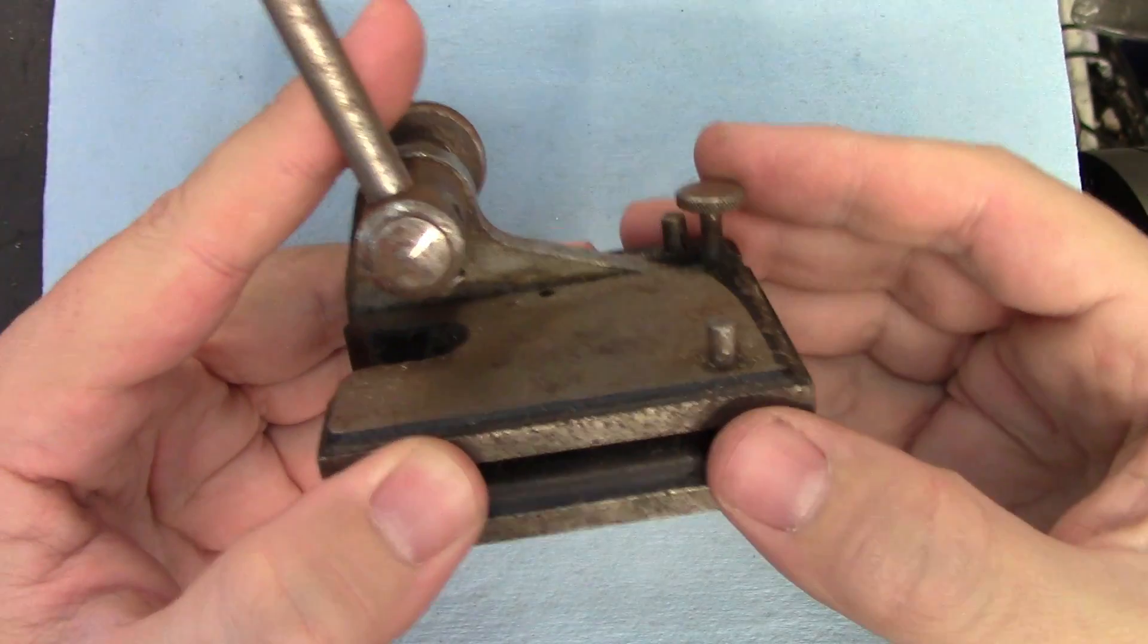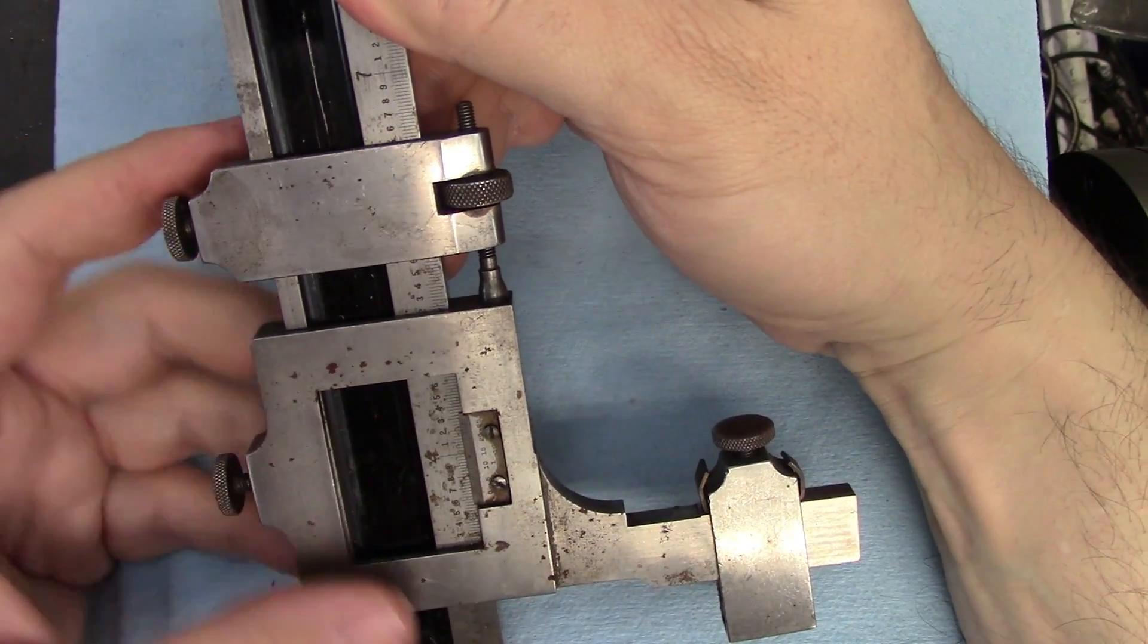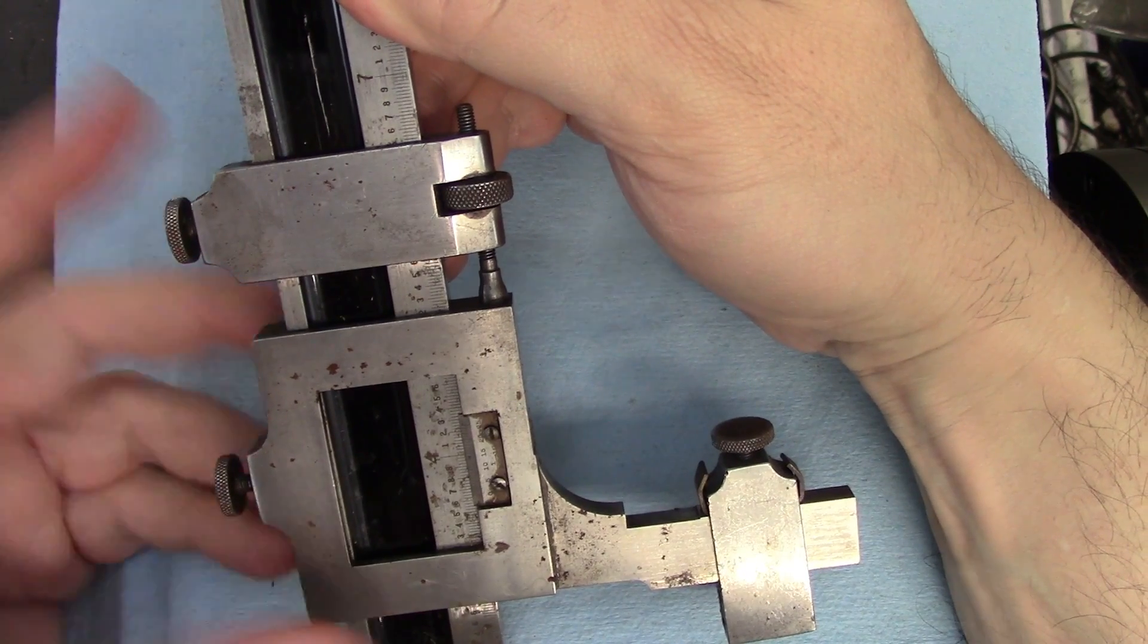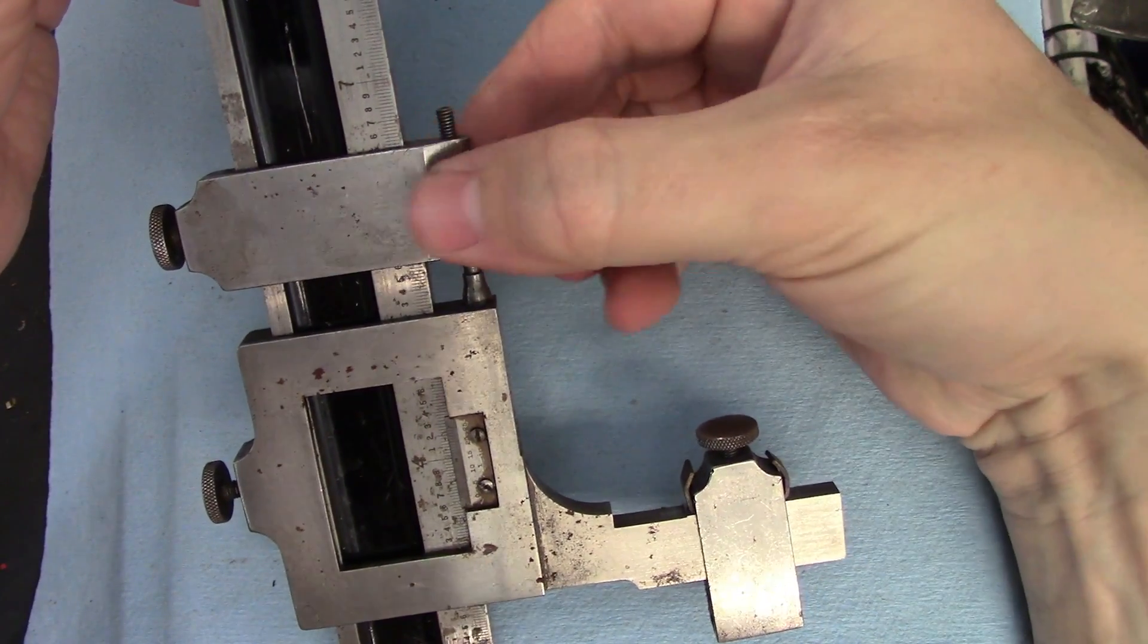The surface gauge will also allow for fine adjustment, usually down here on the base. Height gauges will have it here on the slide, and it's usually some kind of split clamp like this where you can tighten one half and then use the screw to finesse it into position.